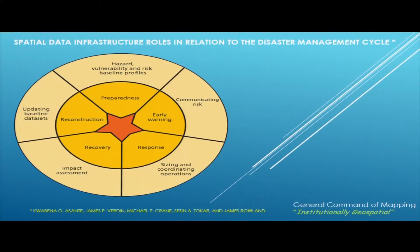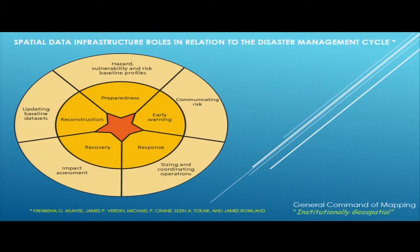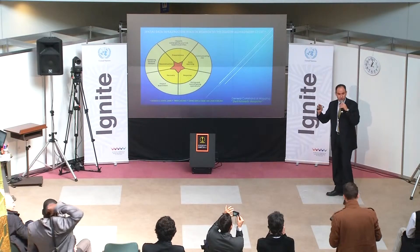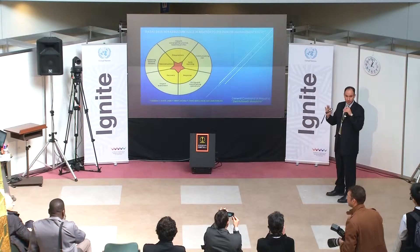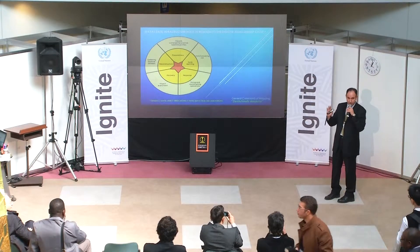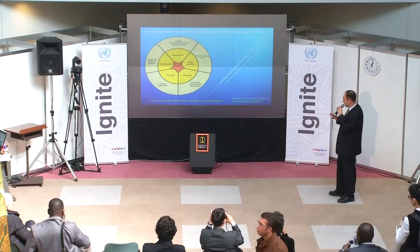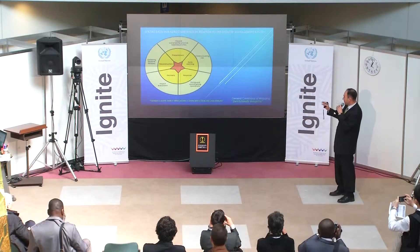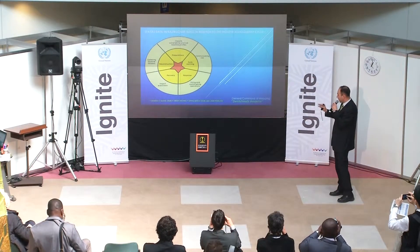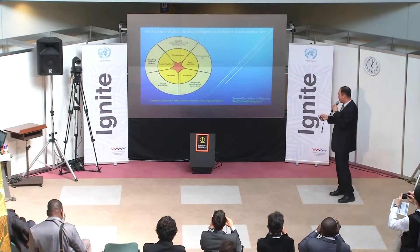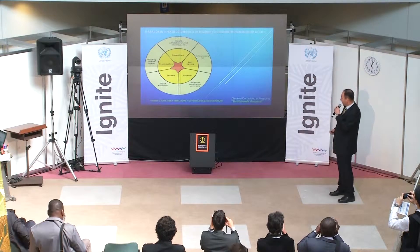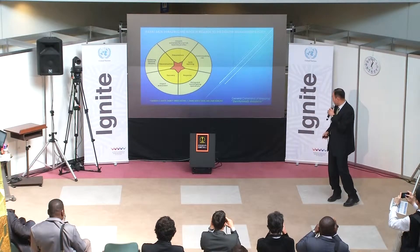If we combine these periods in a typical disaster management cycle, this cycle consists of five phases: preparedness, early warning, response, recovery, and reconstruction phases.